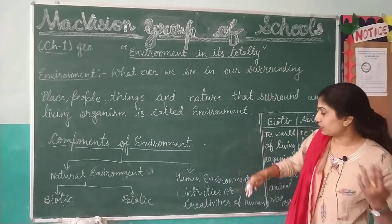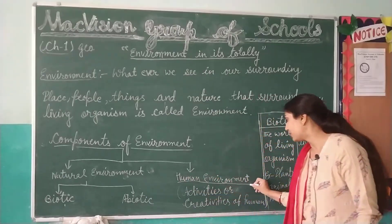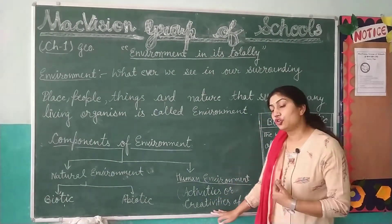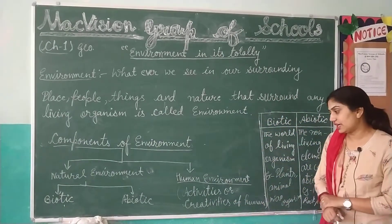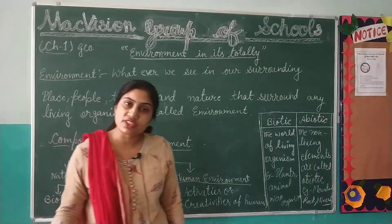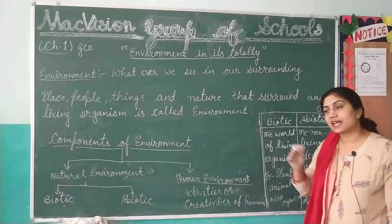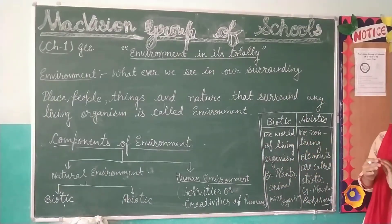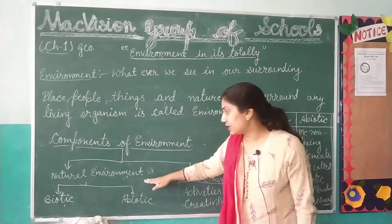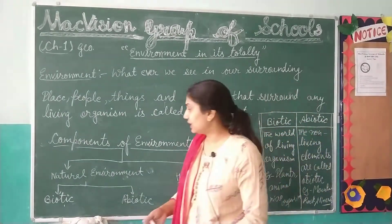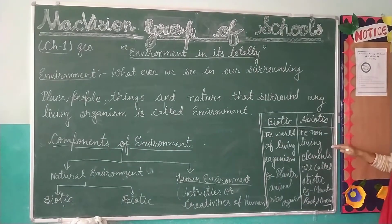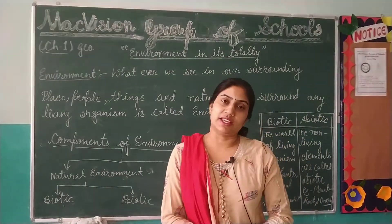The second level of environment components is human environment. Human environment refers to the activities of human beings. We have now covered natural environment and human environment — natural environment is divided into biotic (living components) and abiotic (non-living components). Thank you.